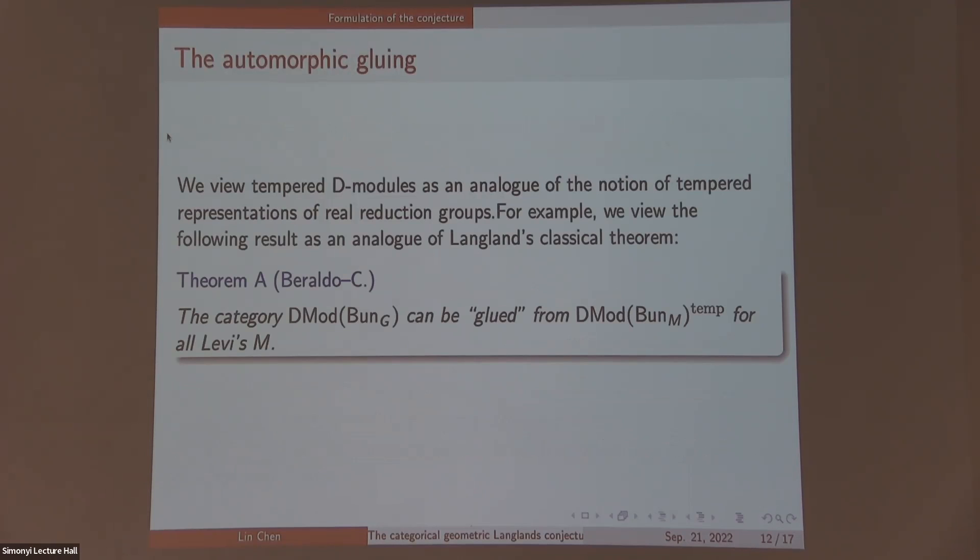Also this notion of tempered D-modules, we view it as an analog of the notion of tempered representations of real reductive groups. For instance, we have the Borel-Weil theorem. It says that the category of D-modules on Bun_G can be glued from the categories of tempered D-modules on Bun_M, where M are all these Levis, including G. We view it as an analog of parabolic induction classification of representations of real reductive groups.